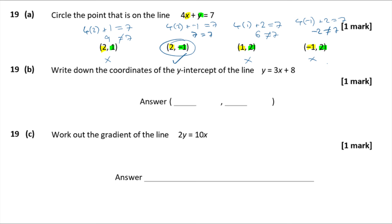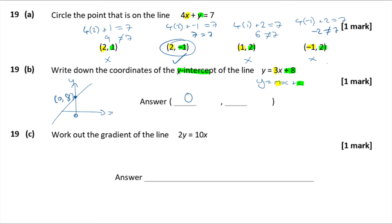Question 19b — write down the coordinates of the y-intercept of the line y = 3x + 8. Equations of straight lines in the form y = mx + c have gradient m and y-intercept c. Here c = 8, so the line crosses the y-axis at 8. The y-intercept lies on x = 0, so the coordinates are (0, 8).